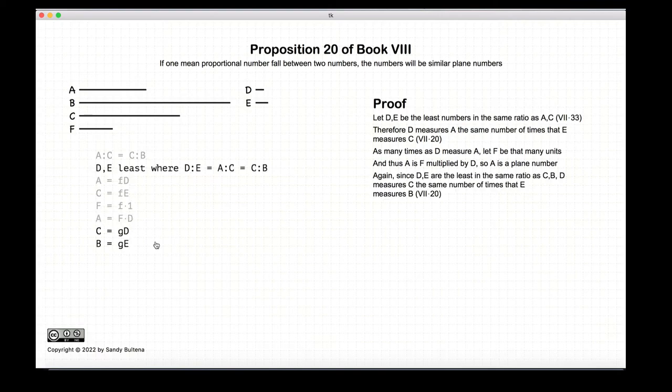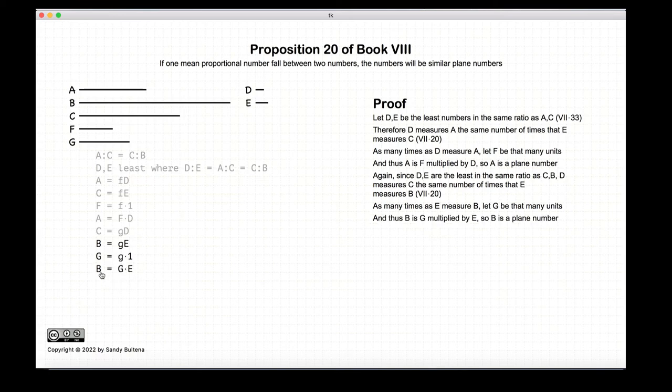Similarly, we can do this for B. So we have that D measures C and E measures B. We set capital G equal to little g times 1. And we have that B is a planar number, and it's equal to G times E.